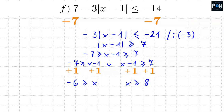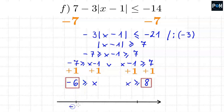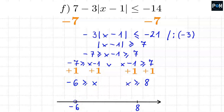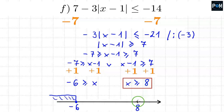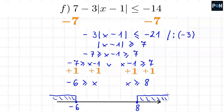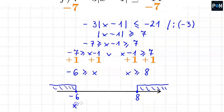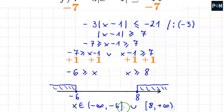We draw the number line and mark negative 6 and 8. For the first inequality, x is less than or equal to negative 6: closed circle at negative 6, going left. For the second, x is greater than or equal to 8: closed circle at 8, going right. The solution is the union of intervals: x belongs to the interval from negative infinity to negative 6, union the interval from 8 to plus infinity.